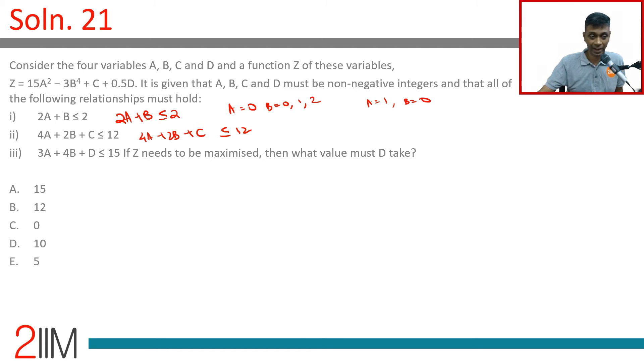We have 4A + 2B + C. So, 4A + 2B: (0,0): 0. (0,1): 2. (0,2): 4. (1,0): 4.